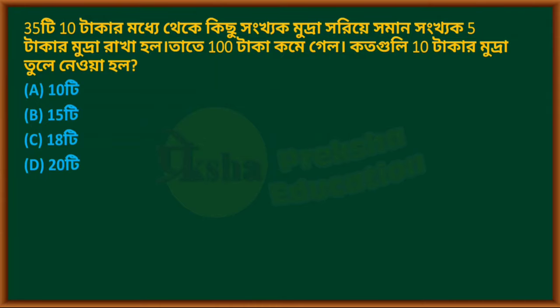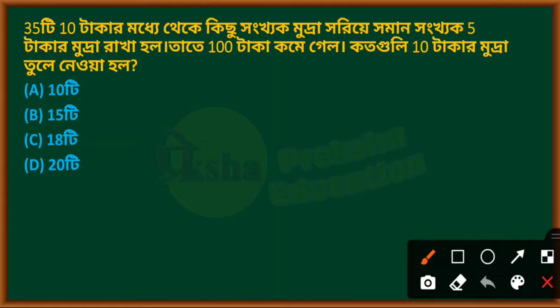So let's see what I am going to tell you about. We have a problem where there are 3 types of coin denominations — 5-taka coins and 10-taka coins. The total amount was initially 35 taka, and we need to figure out the quantity of each coin.